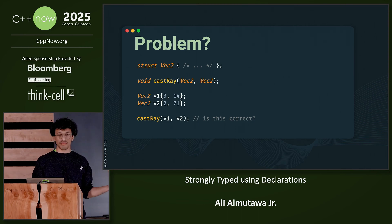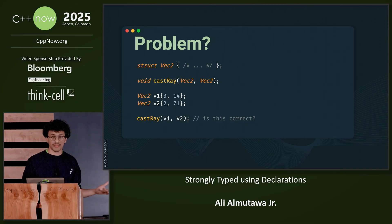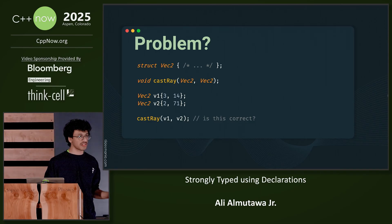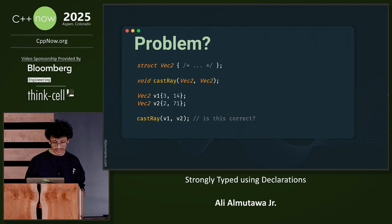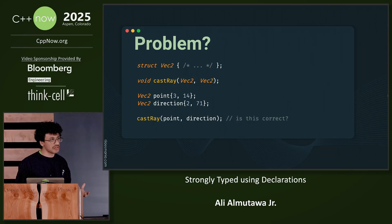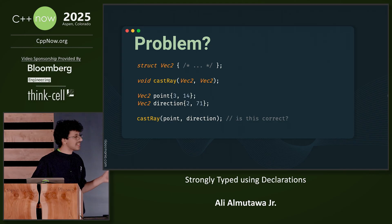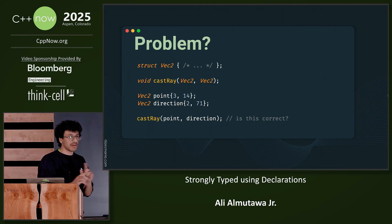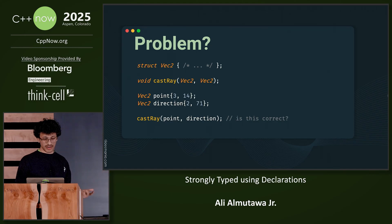Is v2 the point or is v1 the point? Which one is the direction? So this doesn't really give you enough information. One possible solution to this is to name your variables meaningful names. But again, this doesn't really help you that much if you swap the arguments by accident.